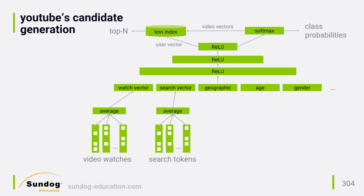YouTube was kind enough to publish their deep learning architecture, at least as it was in 2016. It's interesting that although YouTube has explicit ratings in the form of thumbs up and thumbs down ratings, they don't use them at all for generating recommendations because that data is too sparse.